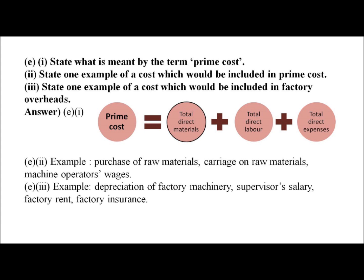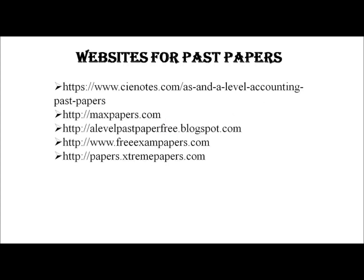In part (e), we are asked what is meant by prime cost. Prime cost is the sum of total direct materials, plus total direct labour, plus total direct expenses. An example of prime cost includes the purchase of raw materials, carriage charges on bringing raw materials in, or wages paid when producing the product. We are also asked for an example of factory overhead, which can include depreciation of factory machinery, supervisor salary, factory rent, or factory insurance.